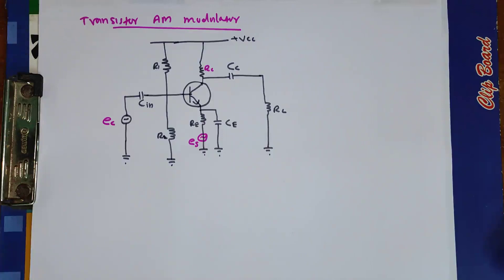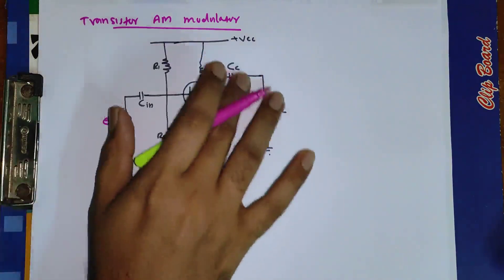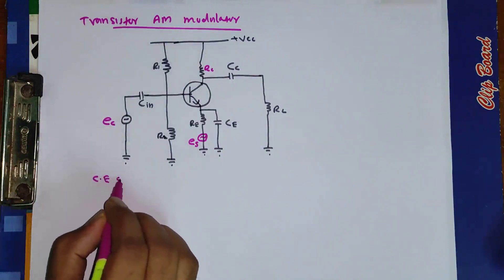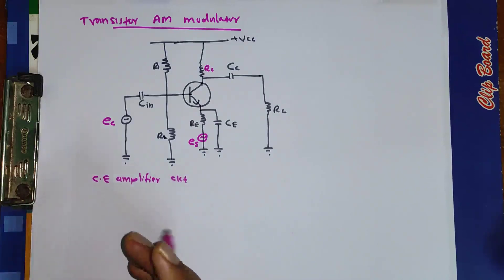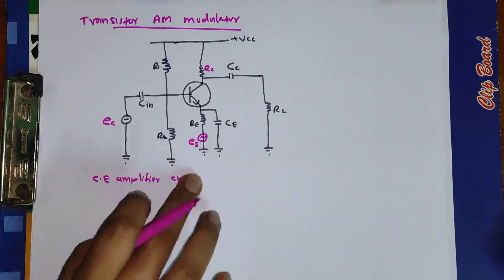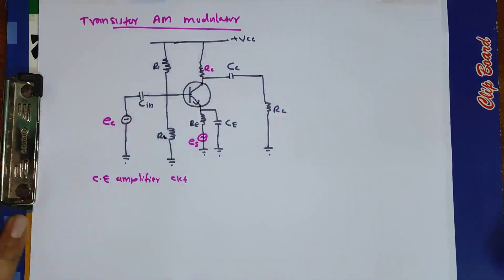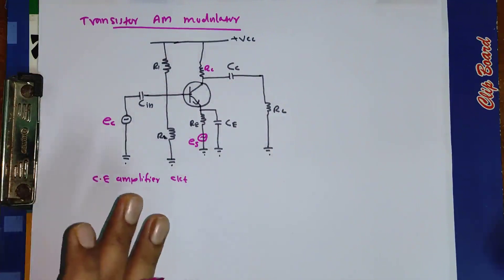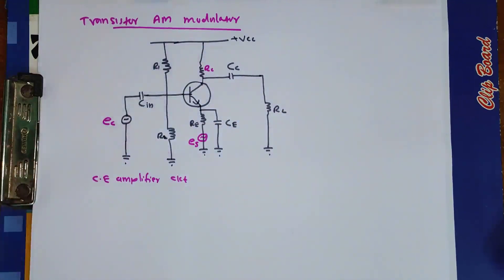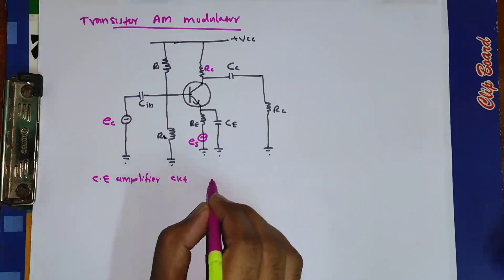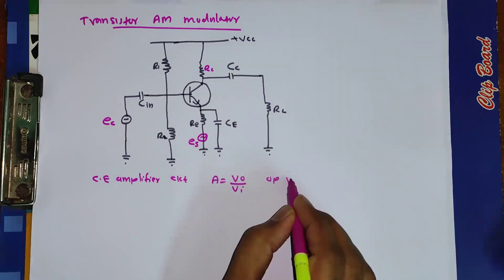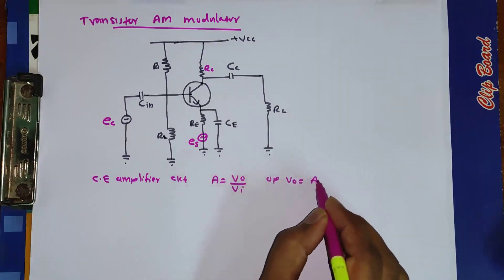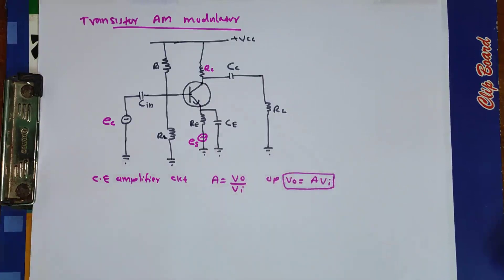Now let us discuss about the working. This circuit is essentially a common emitter amplifier, a CE amplifier circuit. You will study about CE amplifier circuit in the practical paper. For a CE amplifier or for any amplifier, we define the gain of the amplifier as output by input. So the output voltage V_output will be equal to gain times input voltage.